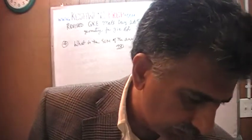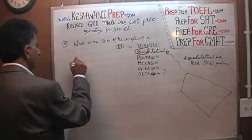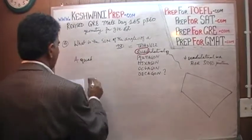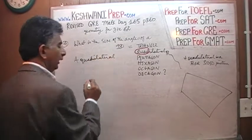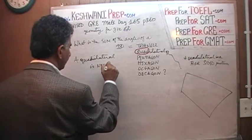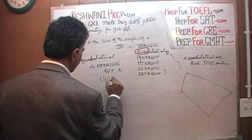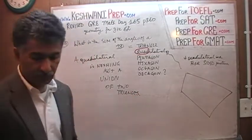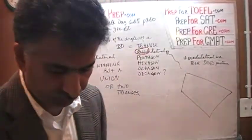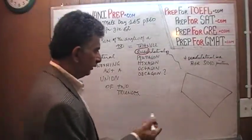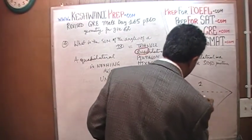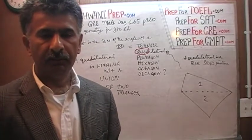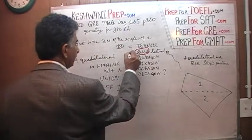To answer that question, what we need to understand is that a quadrilateral is nothing but the union of two triangles — that's all it is. A quadrilateral is just a marriage of two triangles. I'm going to break it up: here's triangle one and here is triangle two. We could have gone left and right; here we have top and bottom. Since the sum of the angles of one triangle is 180, the sum of the angles of a quadrilateral must be two times 180.